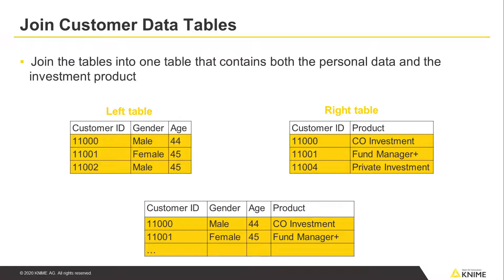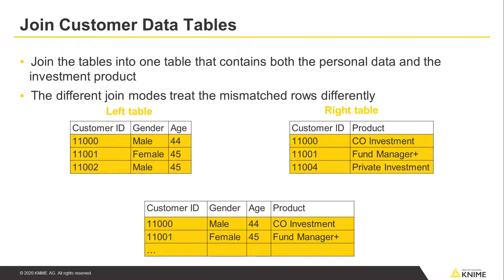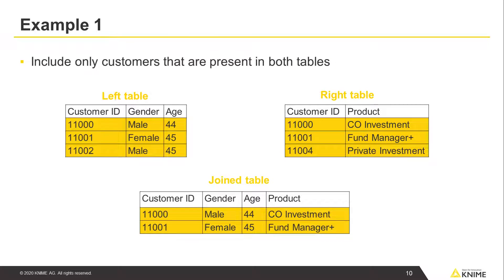Note that both tables contain customer IDs that are not present in the other table. How can we deal with these mismatches? Let's take a look at the different join modes that handle mismatch rows differently. In the joined table, we want to only have those customers that are present in both tables — in other words, the customers for whom we have the personal data and who have selected some investment product.